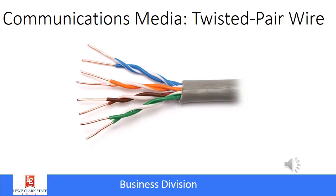There are several different ways that we connect computers to each other, and in a wired network, one of the most common ways is using twisted pair wire. This illustration shows twisted pair wire, and it is just what the name implies — two wires that are twisted together. We see this in a lot of local area networks, and also the old-style telephone wiring uses twisted pair.